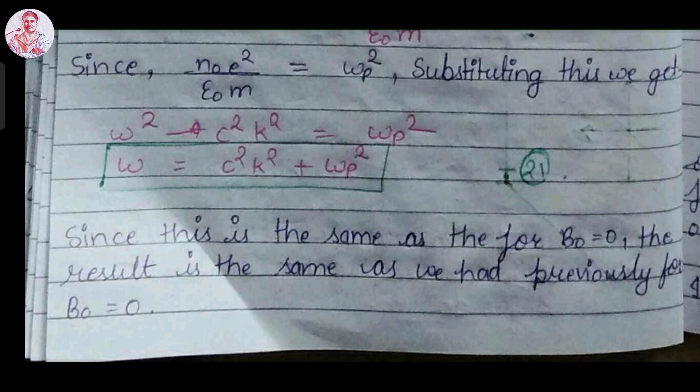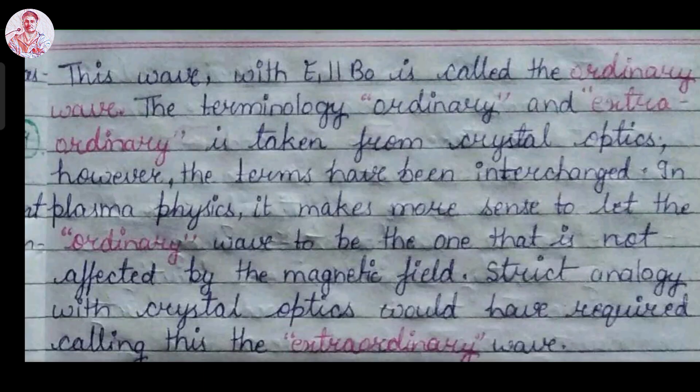This dispersion relation is the same as the equation obtained when B₀ = 0 — it is identical to the result for electromagnetic waves under unmagnetized plasma in the absence of magnetic field B₀. So the ordinary wave, where electric field vector E is parallel to magnetic field vector B₀, is not affected by the magnetic field. The terminology 'ordinary wave' and 'extraordinary wave' are taken from crystal optics. Extraordinary waves are those in which the electric field vector is perpendicular to the magnetic field vector B₀.